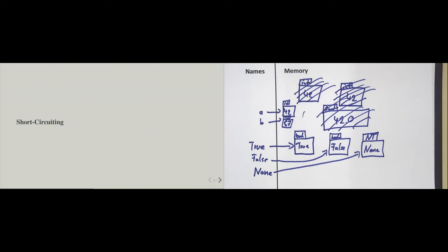In the same way, an empty string is considered false. However, a string with some text in it is considered true. The rule is the same as for lists: an empty string is false and a non-empty string is true. Whenever something evaluates to true but is not the bool True object, we call it truthy. Falsy means an object that behaves as if it is false, but the object itself is not False.